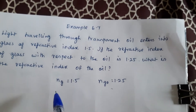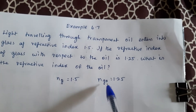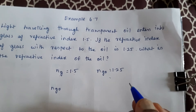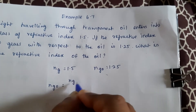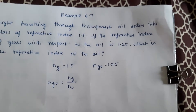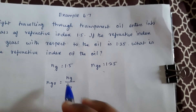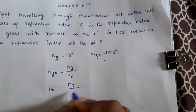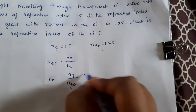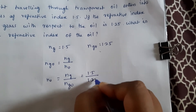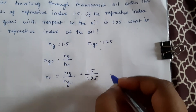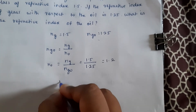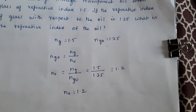So NG = 1.5 and NGO = 1.25. We can write the refractive index of the glass with respect to oil as the refractive index of the glass divided by the refractive index of the oil. So NO = NG / NGO = 1.5 / 1.25 = 1.2. Therefore, the refractive index of the oil is 1.2.